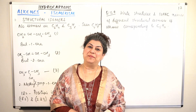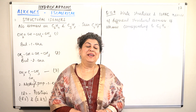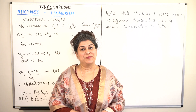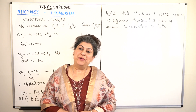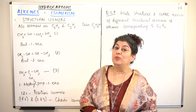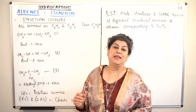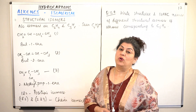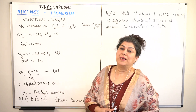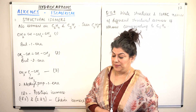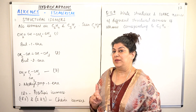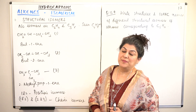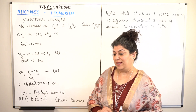Hello, I'm Seema and welcome to part 17 of the chapter Hydrocarbons. In the previous video we talked about nomenclature in alkenes. In this video I'm going to start talking about isomerism in alkenes. Alkenes show two types of isomerism: structural isomerism and geometrical isomerism.